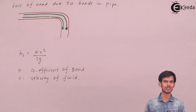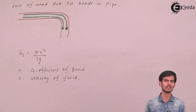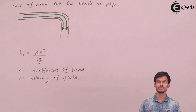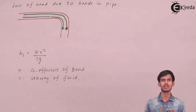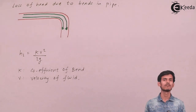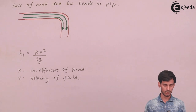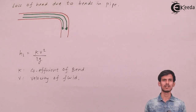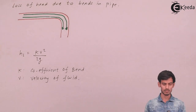The Darcy-Wiesbach equation is 4FLV² / 2gD, where F is the friction factor, V is velocity, D is diameter, and L is the length of the pipe. We also saw formulas for minor losses: sudden contraction, sudden expansion, entry, exit, and bends. These formulas will be used in numerical problems, so it is very important to memorize them. If you know these formulas by heart, it will be very easy to use them in numericals. I hope you all have understood this. Thank you.